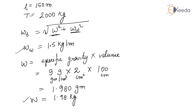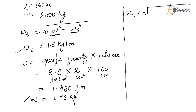Now put the values of W and WW into the WT formula. WT = √(W² + WW²) = √(1.98² + 1.5²) = 2.48 kg. So the total effective weight of the conductor per meter is 2.48 kg. Now we put this effective weight into the SAG formula.